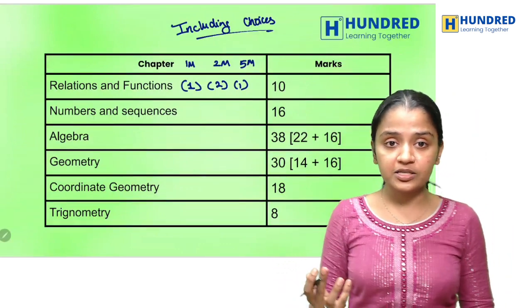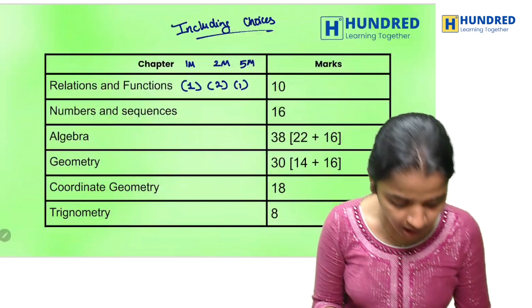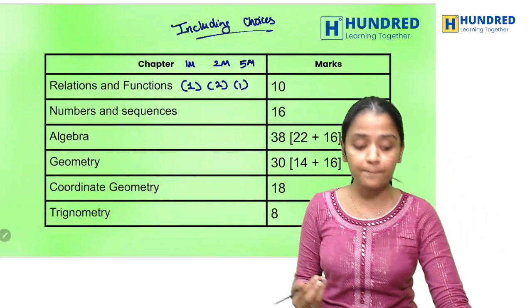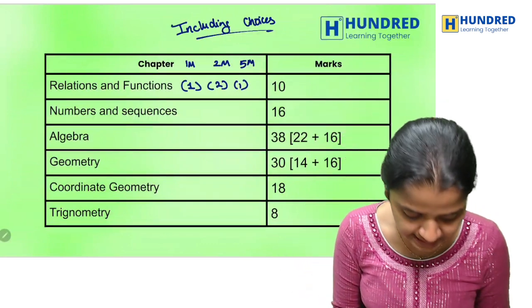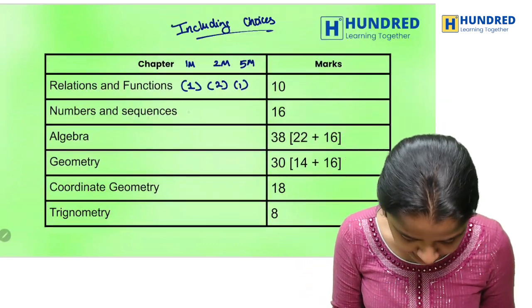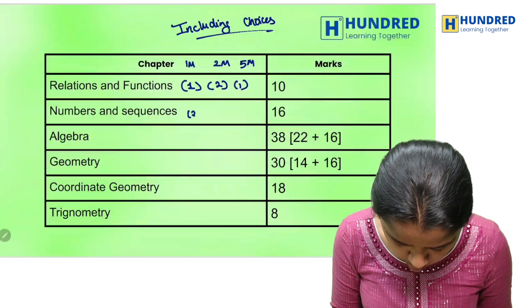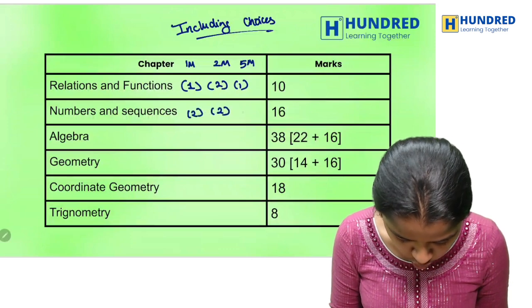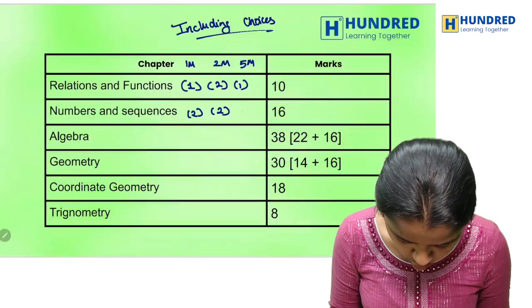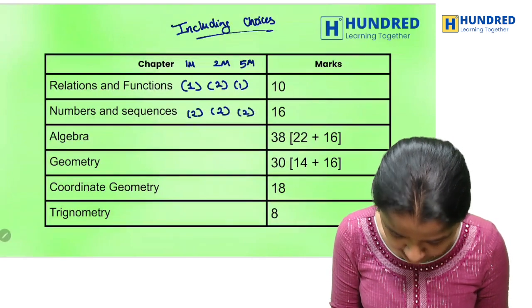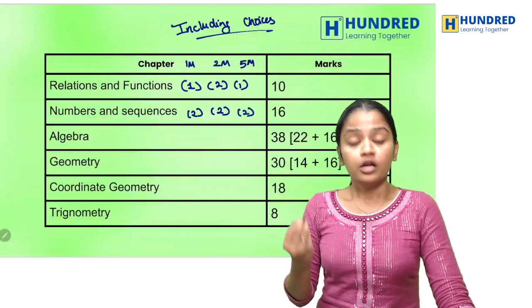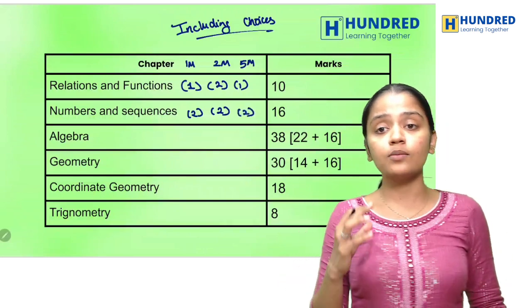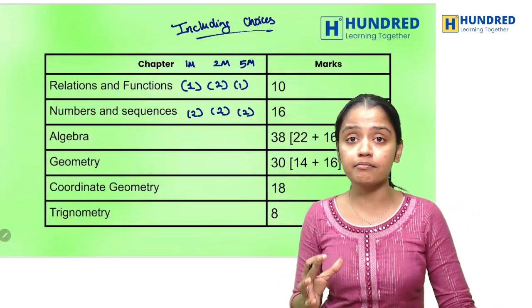For Numbers and Sequences, you will have 2 marks, 2 marks, 2 marks, 2 marks, 2 marks, and 5 marks. Therefore, you will have 16 marks for Numbers and Sequences.